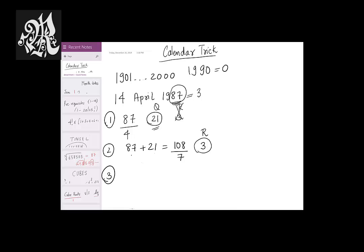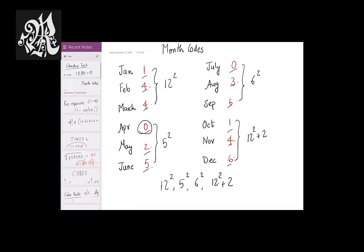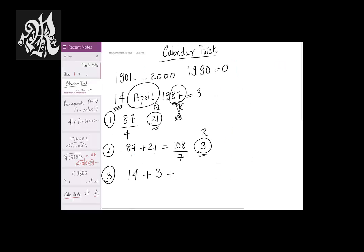Step number 3. Now step number 3 is the final step. Take the date, whatever the date was, 14 for that matter in this case, plus the year number that you've got, 3 in this case, and plus the month code. Now the month is April. Look at it carefully. The month code of April is 0. So I'll get back here, I'll get a 0. So 14 plus 3 plus 0. This is the date. This is the year number. And this is the month code. I get a 17.